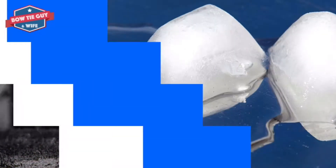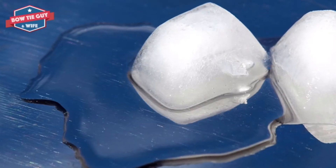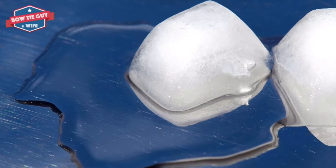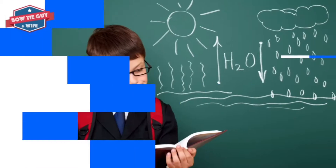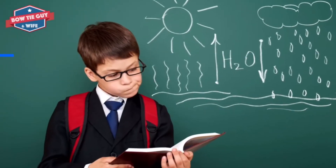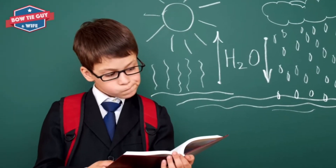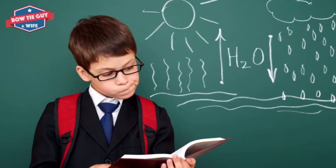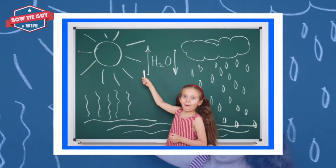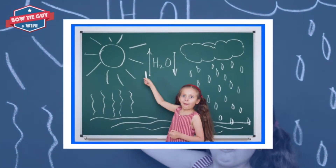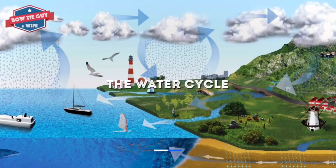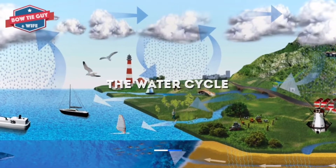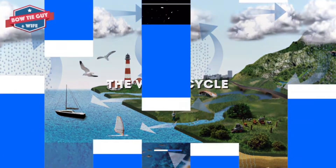What is the water cycle? On Earth, water is always changing from one form to another. It changes from liquid to gas, to a solid, and back again. Water that changes from one form to another creates what is known as the water cycle.